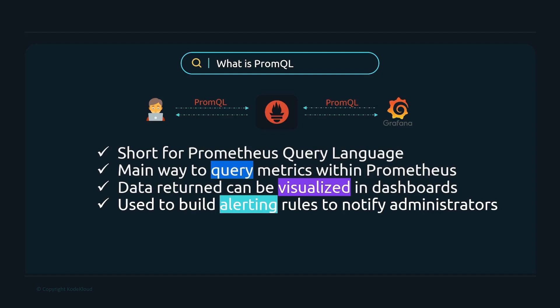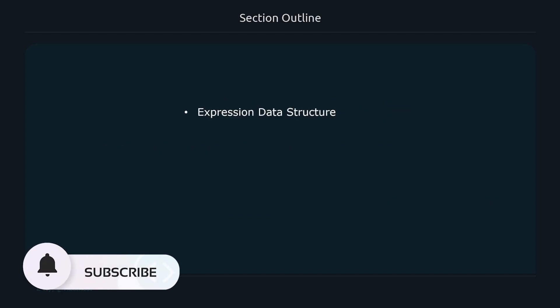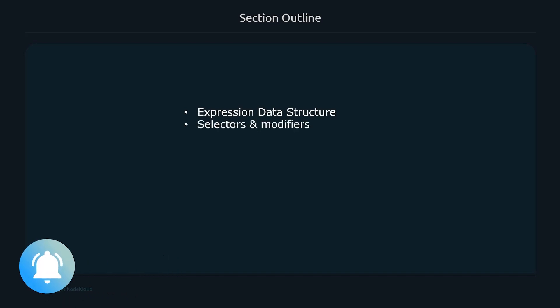You can also use PromQL to build alerting rules to notify administrators when certain thresholds have been crossed. In this section we're going to cover a lot of different things — this is one of the larger sections. We'll go over the different expression data structures, what they can return, and different selectors and modifiers to get the exact data we're interested in.